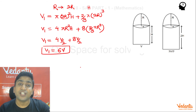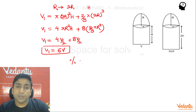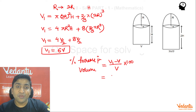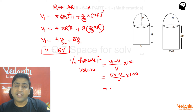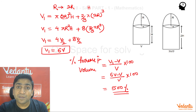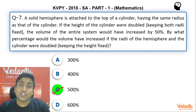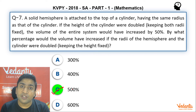So V1 = 6V. Now for the percentage increase in volume: ((V1 − V) / V) × 100 = ((6V − V) / V) × 100 = 5 × 100 = 500%. So the answer is 500%, which is option C. This was a simple application but required a bit of calculation.